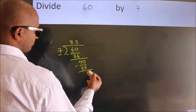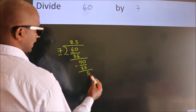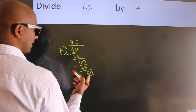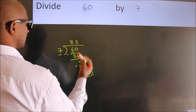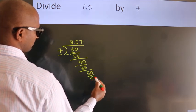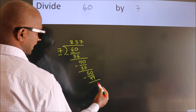After this, we already have the decimal. So directly take 0. So, 50. A number close to 50 in 7 table is 7, 7, 49. Now we subtract. We get 1.